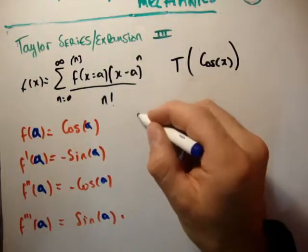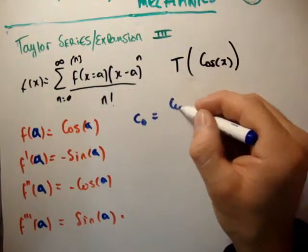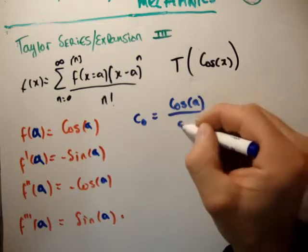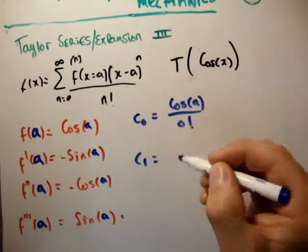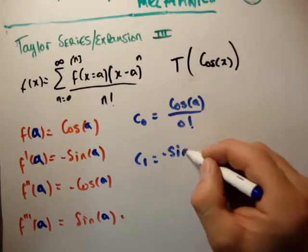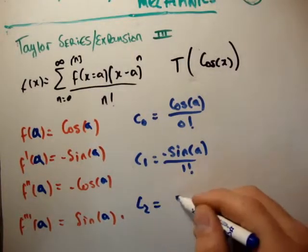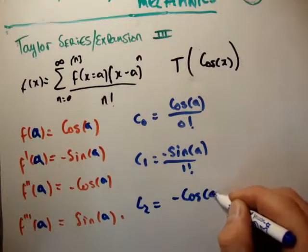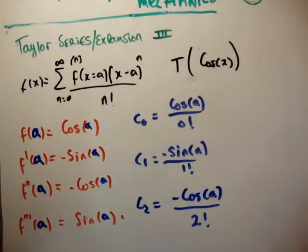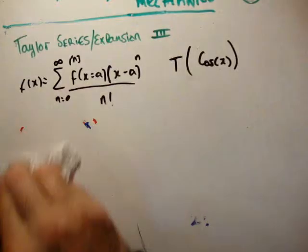These allow us to calculate our coefficients. We know that each one of those divided by n factorial gives us our coefficients. So that means c_0 equals cos(a) over 0 factorial, c_1 equals -sin(a) divided by 1 factorial, c_2 equals -cos(a) divided by 2 factorial, and so on.